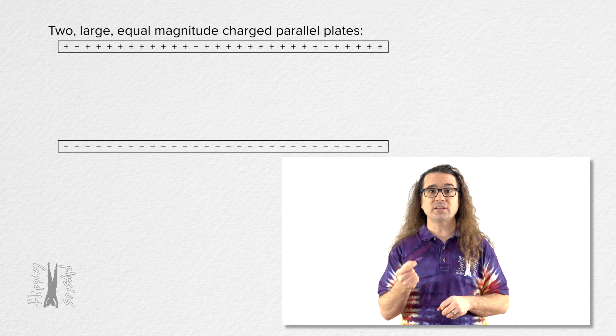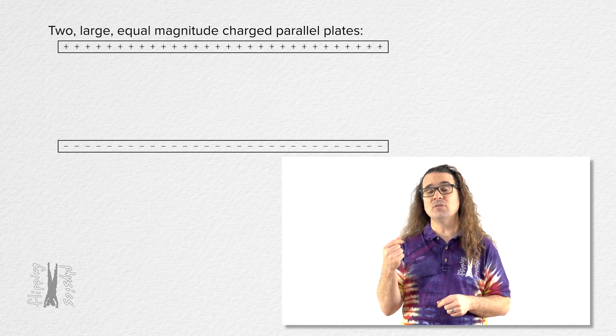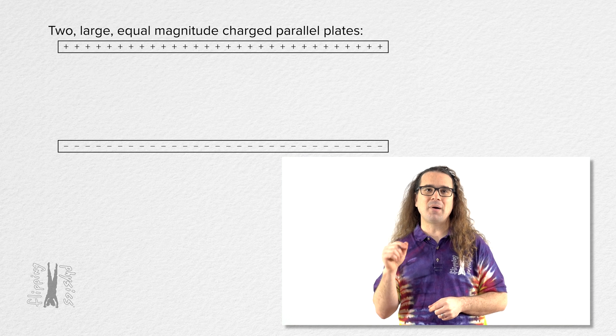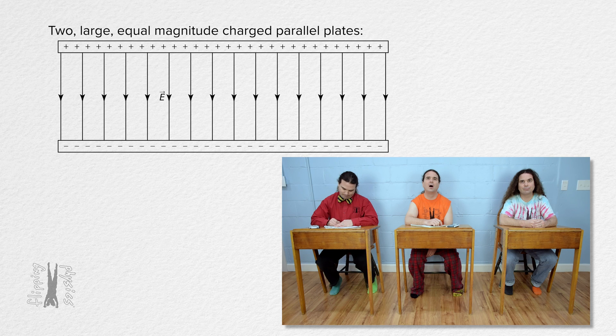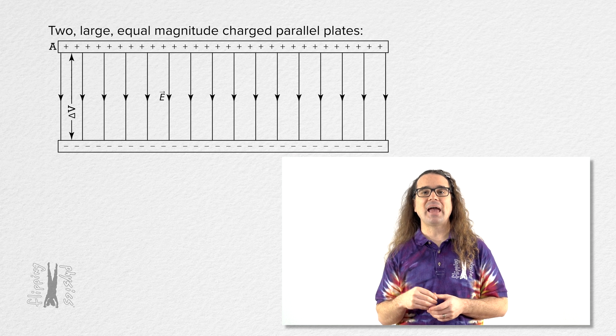In a previous lesson, we showed that the electric field between parallel plates is uniform and is directed from the positive plate to the negative plate, which is, in this example, directed downward. Let's define the top plate as plate A and the bottom plate as plate B.